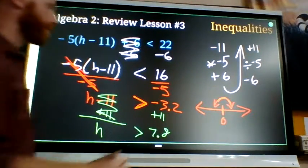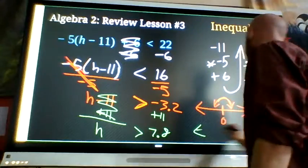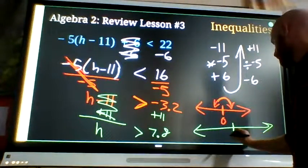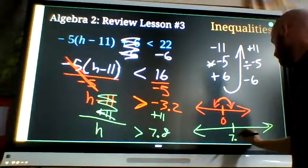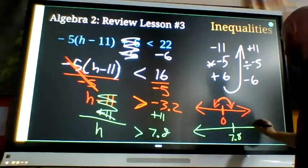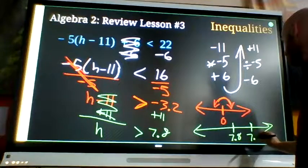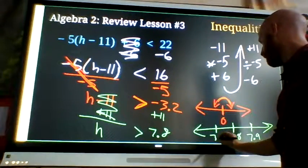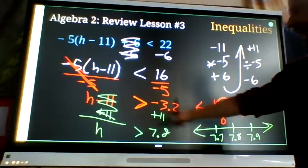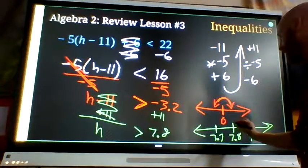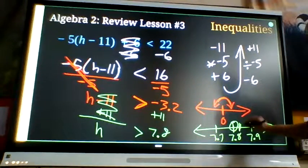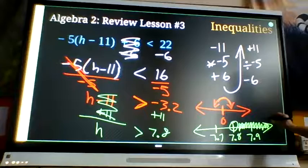If I want to show that on a number line, put some numbers around it. I'm not allowed to equal 7.8 so I keep an open circle. I'm allowed to be bigger than 7.8 so I shade above.